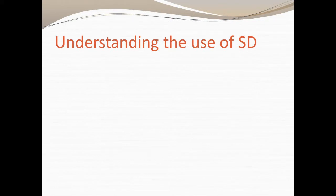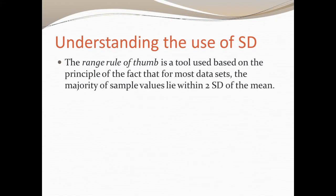The use of standard deviation comes from the range rule of thumb. It's a tool that we use based on the principle that for most data sets, the majority of sample values are going to lie within two standard deviations of the mean. A lot of you are familiar with the bell curve, which we'll talk about later, but using standard deviation creates the range rule because most values will lie within two standard deviations going either below the mean or above the mean.